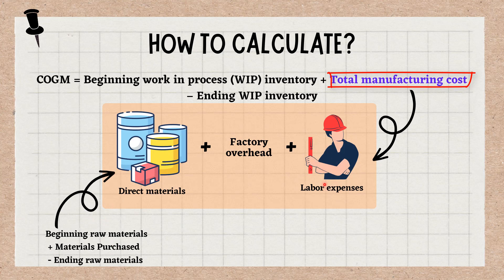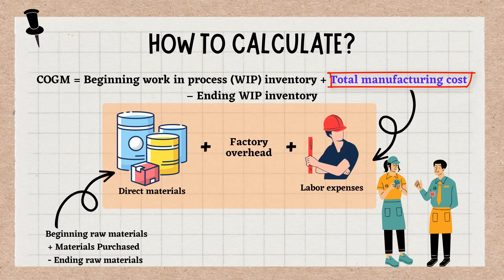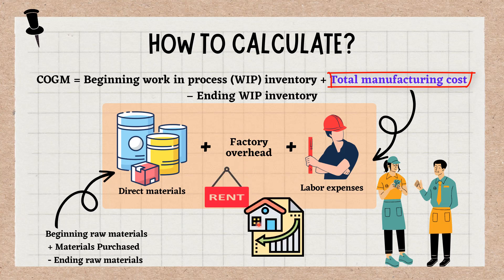Direct labor refers to how much an organization pays in labor costs for a certain time period. You can calculate this value by multiplying the number of hours of work with the hourly rate for each employee. Manufacturing overhead costs refer to indirect costs an organization pays regardless of inventory production. For example, rent for a factory building and depreciation on equipment are manufacturing overhead costs.